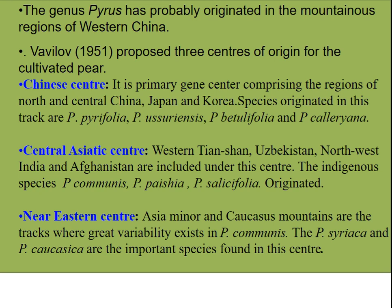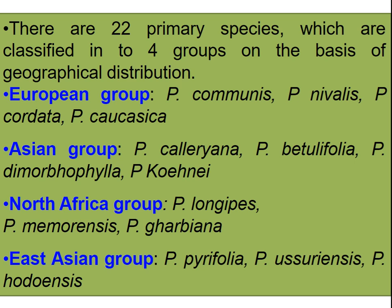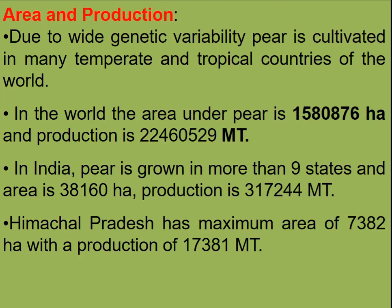There are 22 primary species of pear classified into four groups based on geographical distribution. The European group includes Pyrus communis, Pyrus nivalis, Pyrus cordata, and Pyrus caucasica. The Asian group includes Pyrus calleryana, Pyrus betulifolia, and Pyrus dimorphophylla. The North African group has species like Pyrus longipes and Pyrus mamorensis. The East Asian group includes Pyrus pyrifolia, Pyrus hodoensis, and others. Due to wide genetic variability, Pyrus is cultivated in many temperate and tropical ventures of the world.